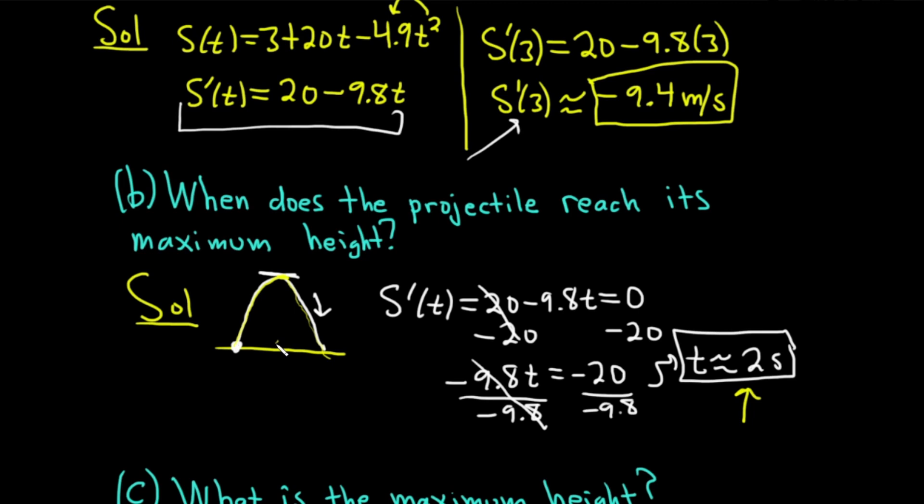So to find out that value of t, what we did was we took our velocity function, which was s'(t) = 20 - 9.8t, and set it equal to zero and solve for t. We got approximately 2 seconds.